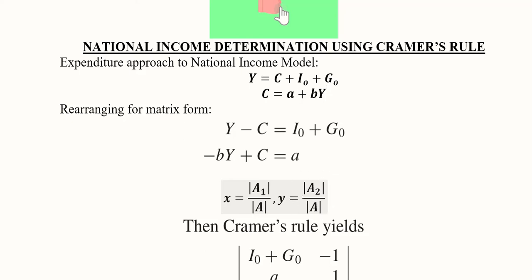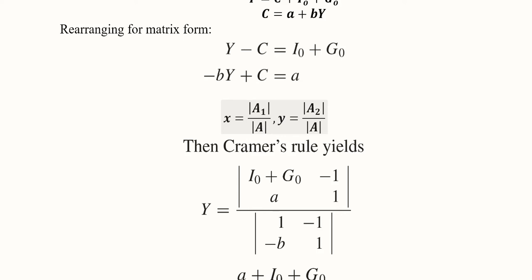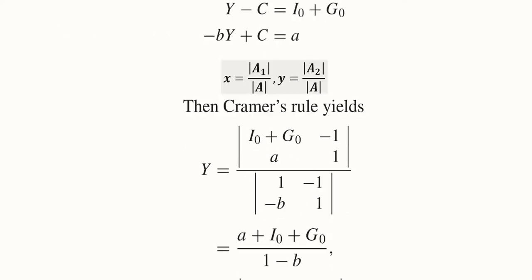So Cramer's rule is being applied here. This is the first column which is now replaced because the original matrix is 1 minus b and minus 1 and 1. In the denominator we have capital A, the original matrix, and this is the replacement matrix. The first column is replaced, the second column is as it is.